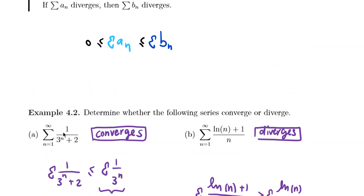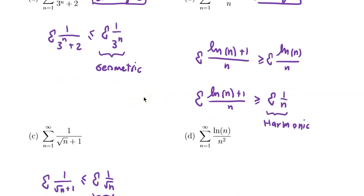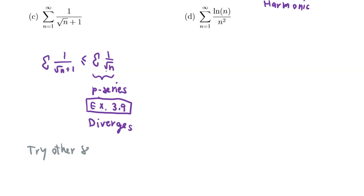Recall the rules: if the big guy converges, the smaller guy also converges; if the smaller guy diverges, the big guy also diverges. But here the big guy diverges, and we can't tell anything about the small guy — it could itself be very large or just a finite number. So we can't conclude anything from this relationship, and we may need to try a different series or a different test.